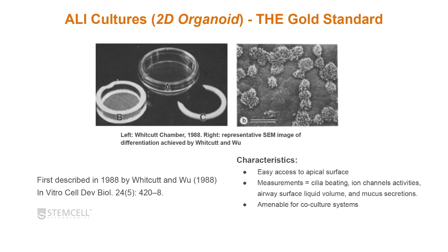In 1988, the Whitcutt chamber was the first type of transwell, first described by that group. The characteristics of this system include easy access to the apical surface, the ability to measure cilia beating, ion channel activity, airway surface liquid volume, and mucous secretion. This system is also amenable for cold culture systems. As you can see in this SEM image, there are nice hairy cilia on top of the epithelial cells.